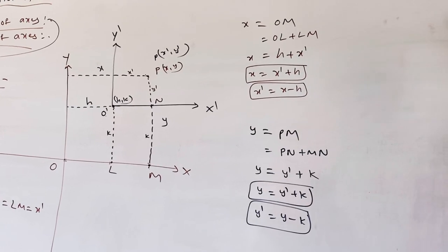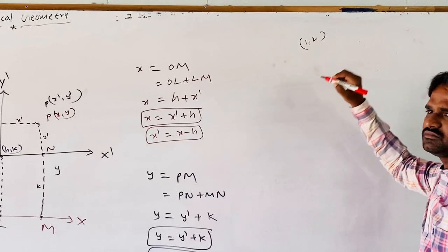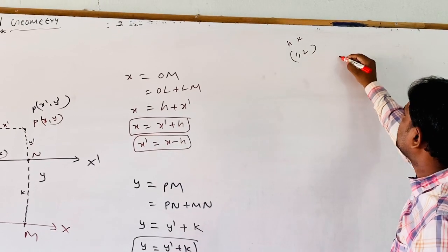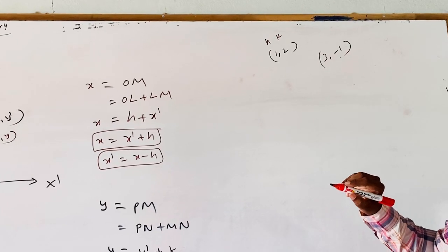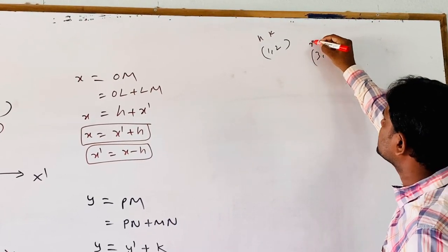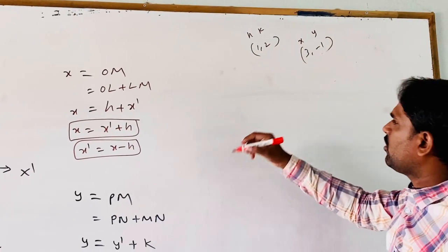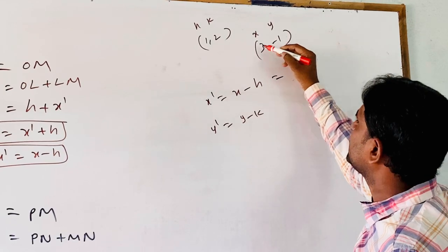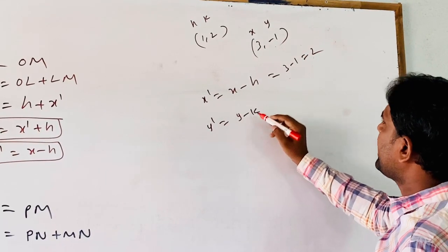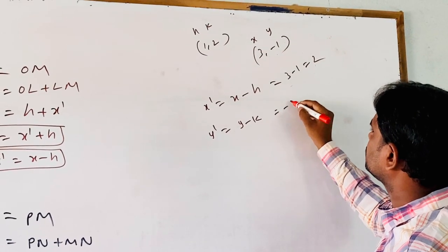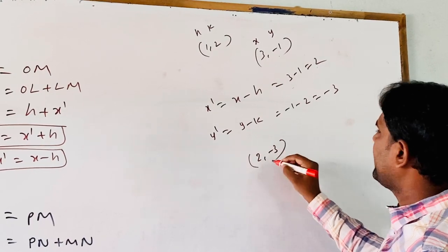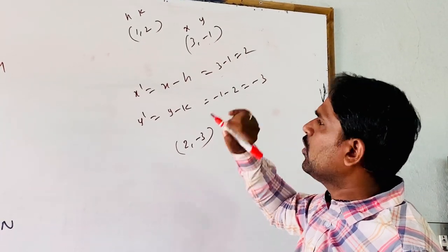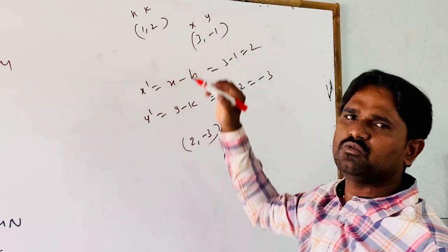Let us go for one example. If the origin is shifted to 1 comma 2, then H equals 1 and K equals 2. The coordinates of point 3 comma minus 1 with respect to the new axis: X dash equals X minus H equals 3 minus 1 equals 2. Y dash equals Y minus K equals minus 1 minus 2 equals minus 3. So 2 comma minus 3 are the new coordinates of 3 comma minus 1, with respect to the original coordinate system where the origin is shifted to 1 comma 2.